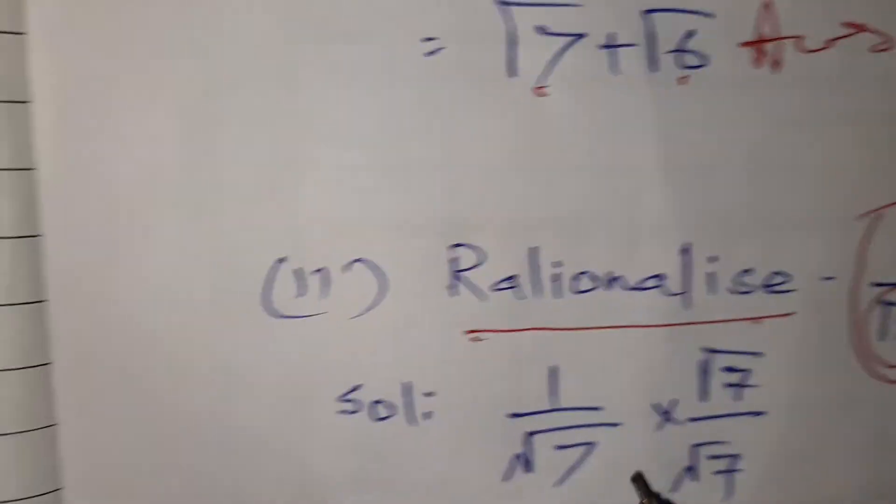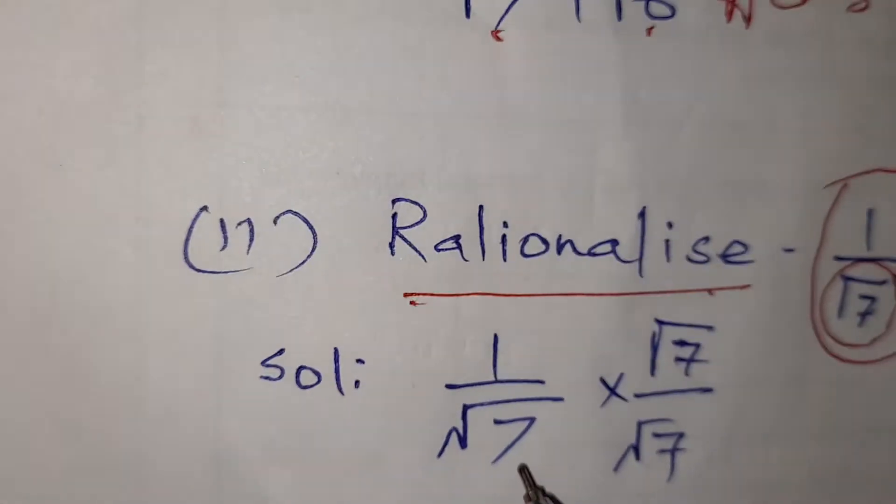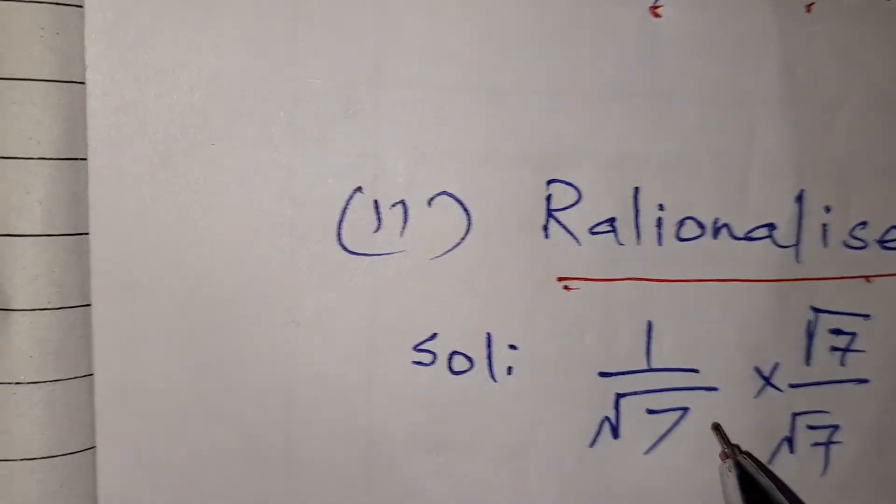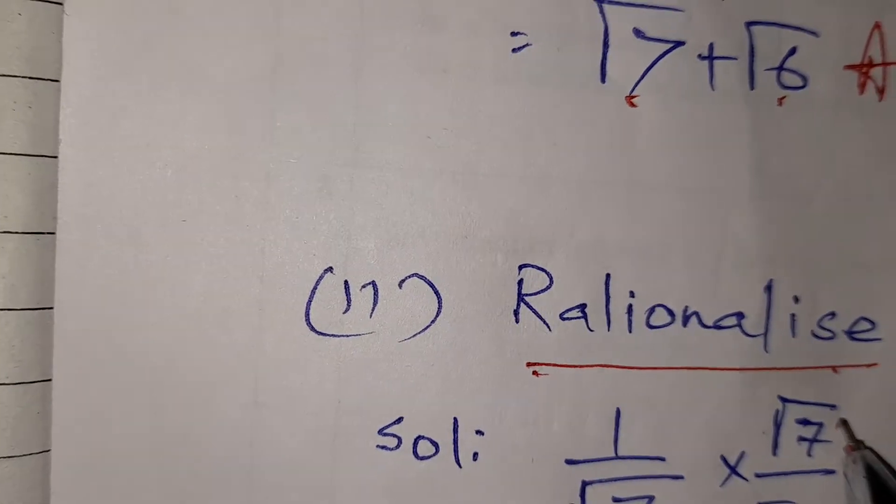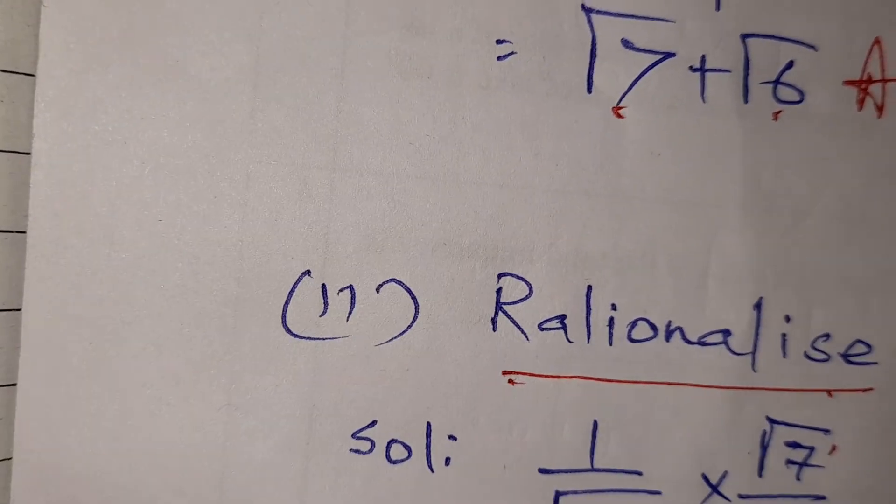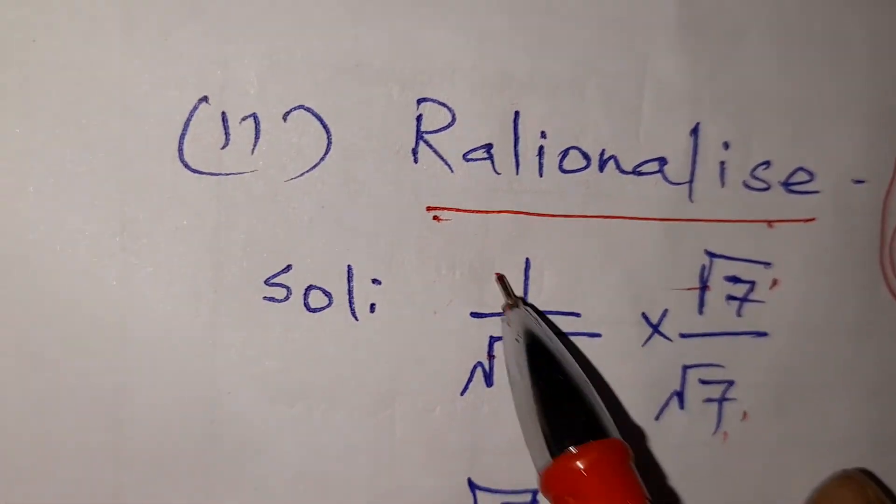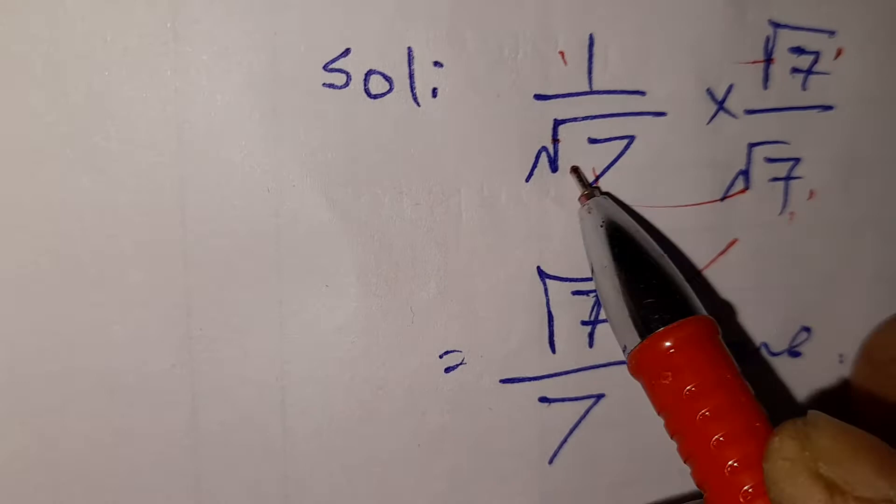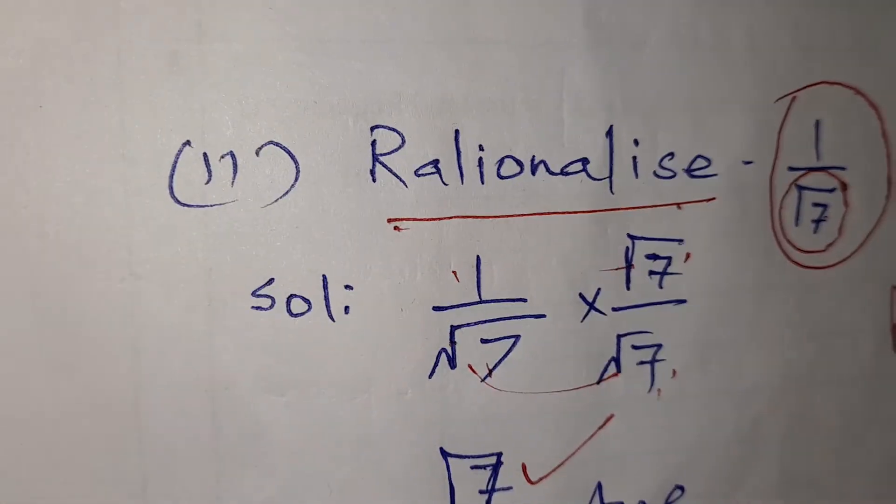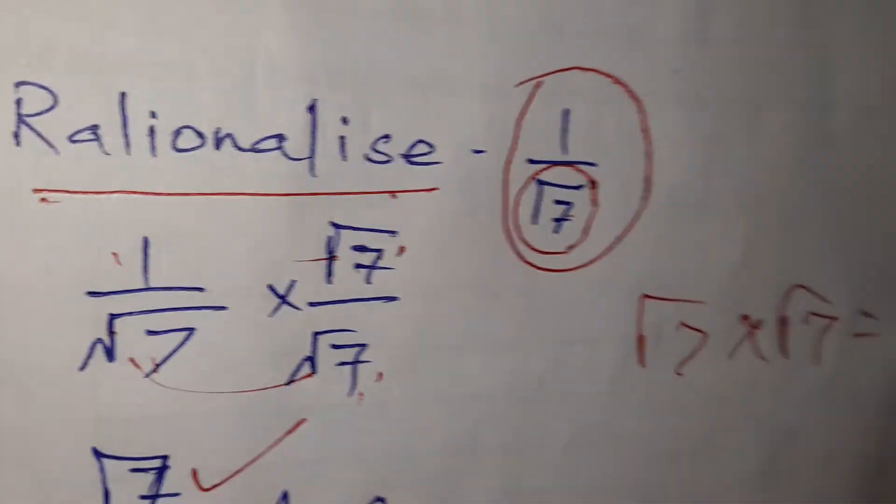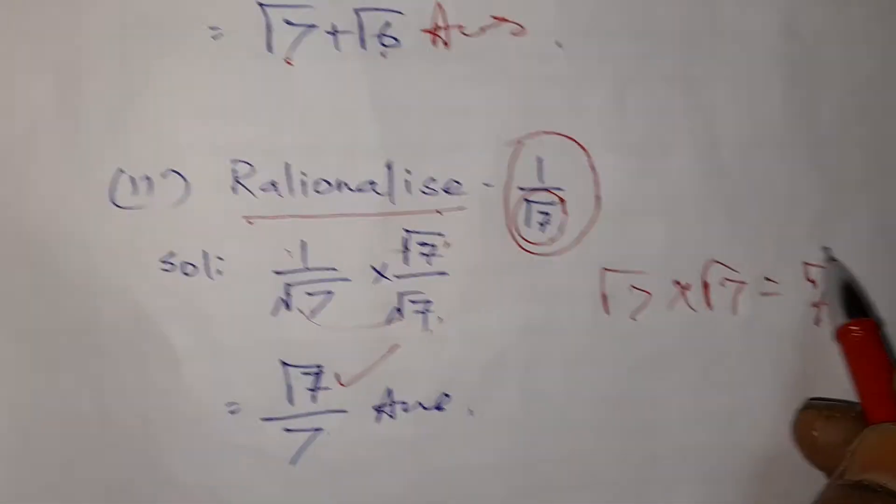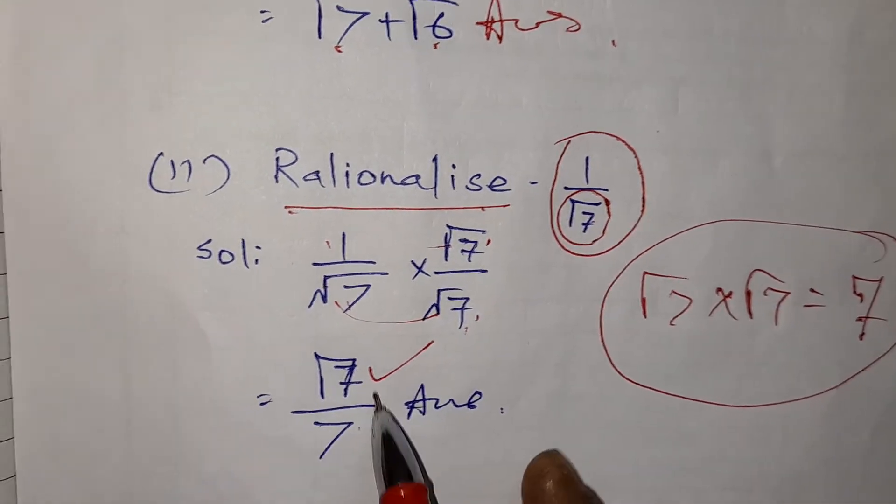The only thing we have to do is multiply numerator and denominator with the same root 7 into root 7. So root 7 into 1 will be root 7, and root 7 into root 7 will be 7.